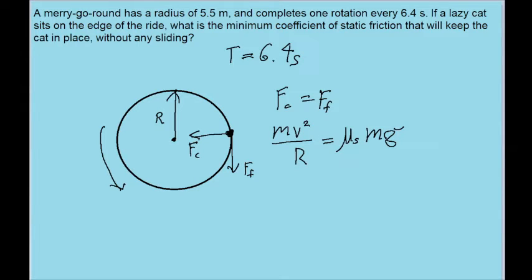The mass appears in both sides of the equation, so we can divide them out, and we can solve for the coefficient of static friction by dividing both sides of the equation by g. So v squared over g times r.